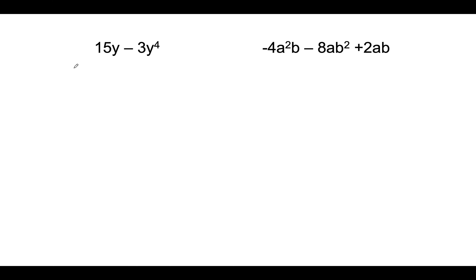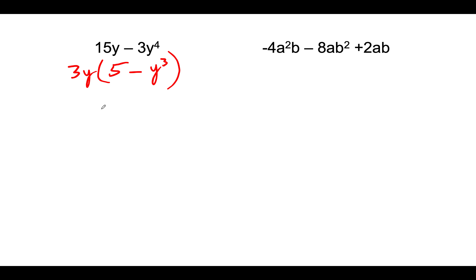Let's try these. This would be a 3 and a y. When 15y loses a 3y I'm left with a 5. When I divide a 3 out I'm left with 1 — we do not have to write that 1 because I have a y cubed. Distributing back: 15y minus 3y to the fourth — correct.